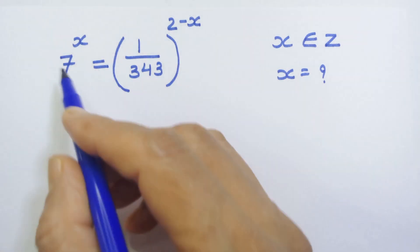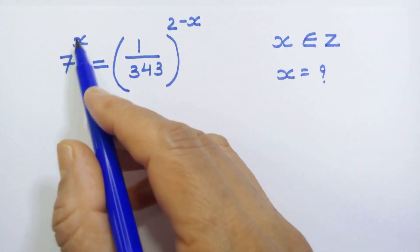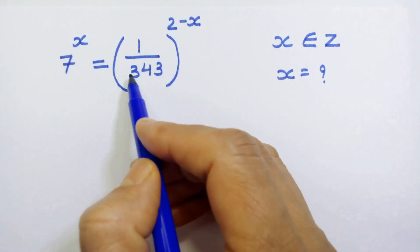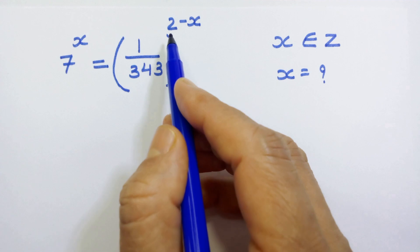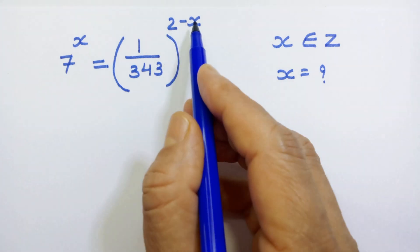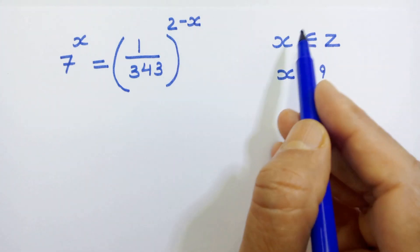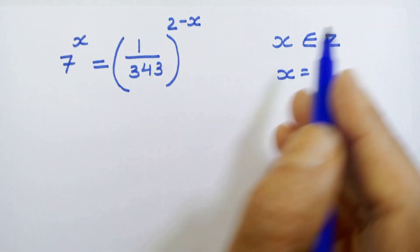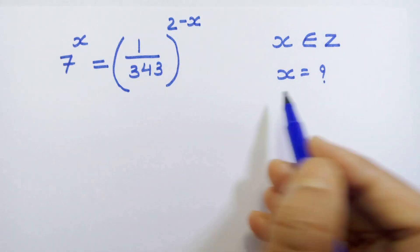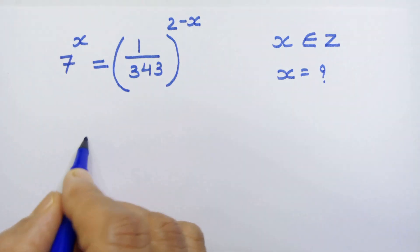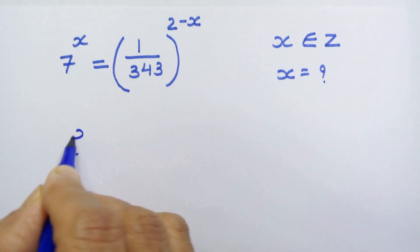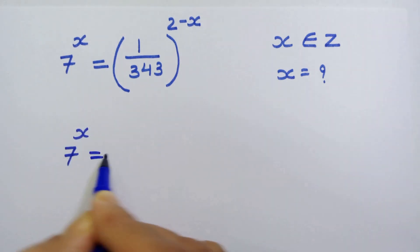Hello friends! Here we have 7 raised to x is equal to 1 upon 343, whole raised to 2 minus x, where x is an integer. Let's solve for x.